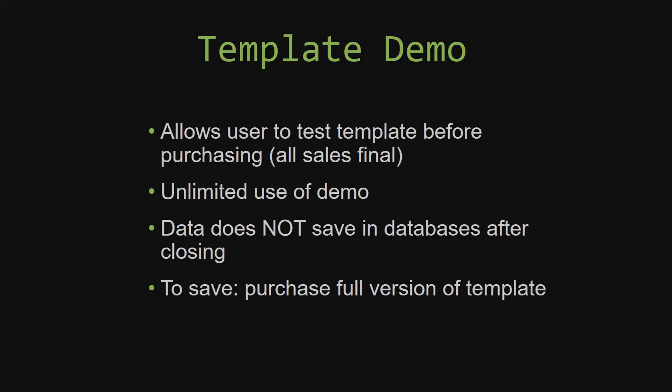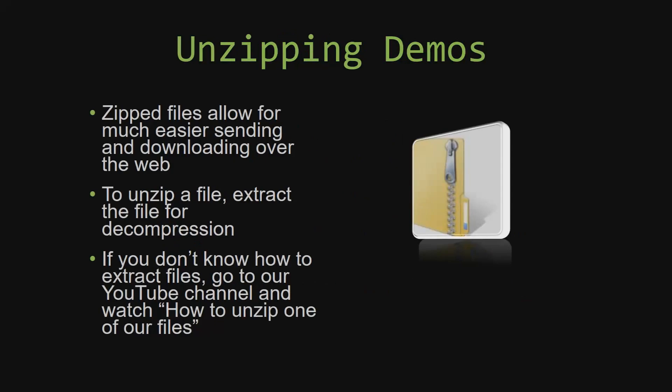Upon downloading a demo, you will have to unzip the downloadable file. Zip files make it much easier to send and download large files over the web. Unzipping a file is a very simple step — all you have to do is extract the file so that you have access to the uncompressed file. If you don't know how to unzip a file, check out our YouTube channel and watch the how-to-unzip video tutorial. The link to that video will be in the description of this video. Now let's get into downloading and testing out one of our templates.